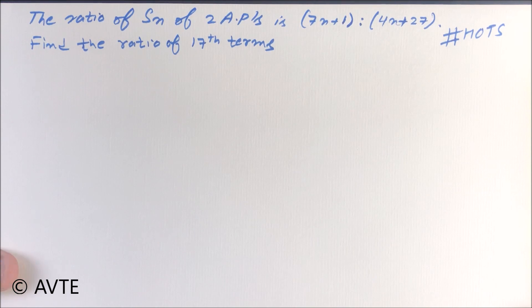The question is: the ratio of the sum of n terms, first n terms of two APs, is 7n plus 1 is to 4n plus 27. You have to find the ratio of their 17th term.